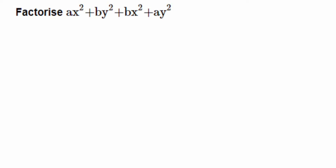Here's a question on factorization: factorize ax² + by² + bx² + ay². Here we cannot apply any identity because all terms are squares and we have four terms. So here we're going to do a grouping and then take the common factors out.